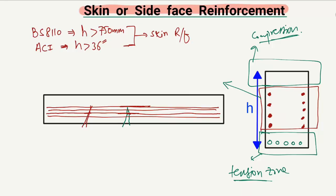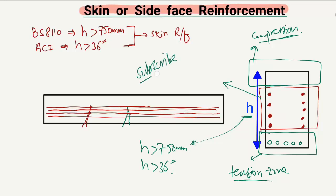In the case of a deeper beam, when the depth H is greater than 750 millimeters per British Standard or Indian Standard, or greater than 36 inches per American Standard, we have to provide this type of reinforcement in order to close these cracks. Hope you guys understood — don't forget to subscribe to our channel for engineering videos, thank you for watching.